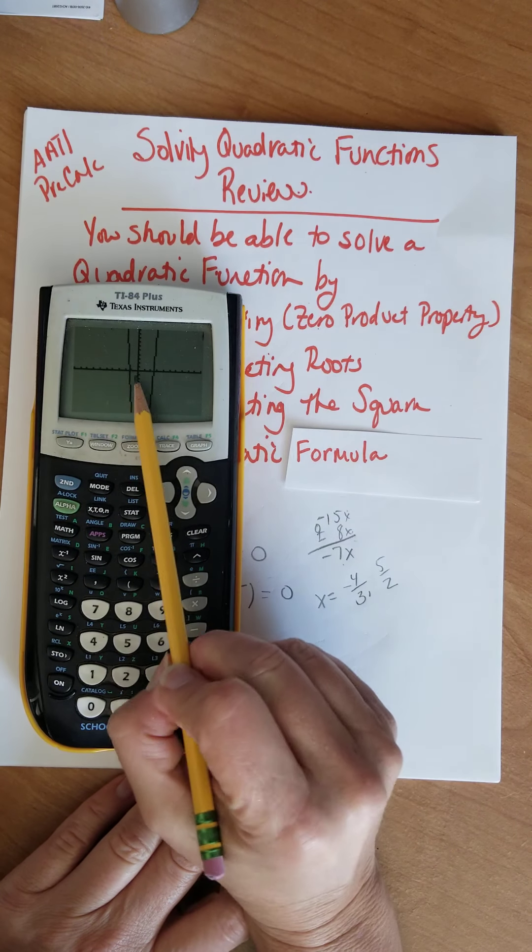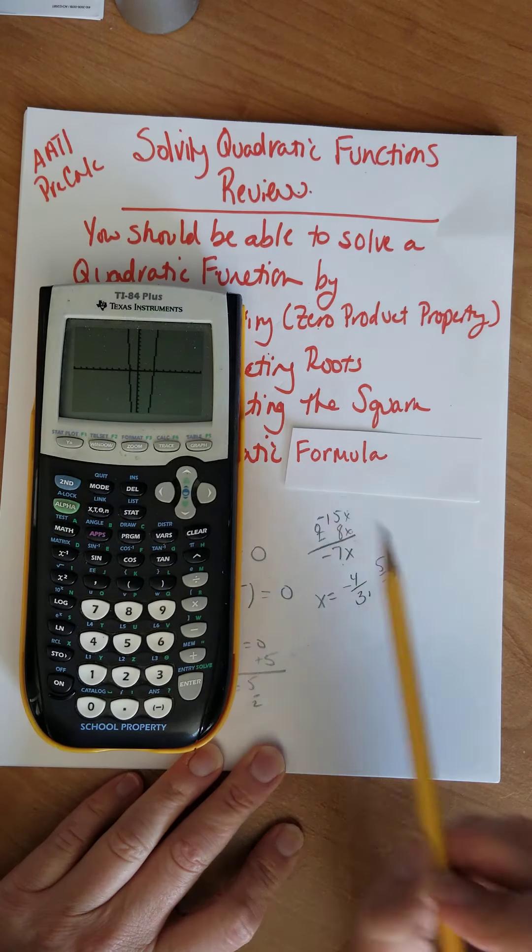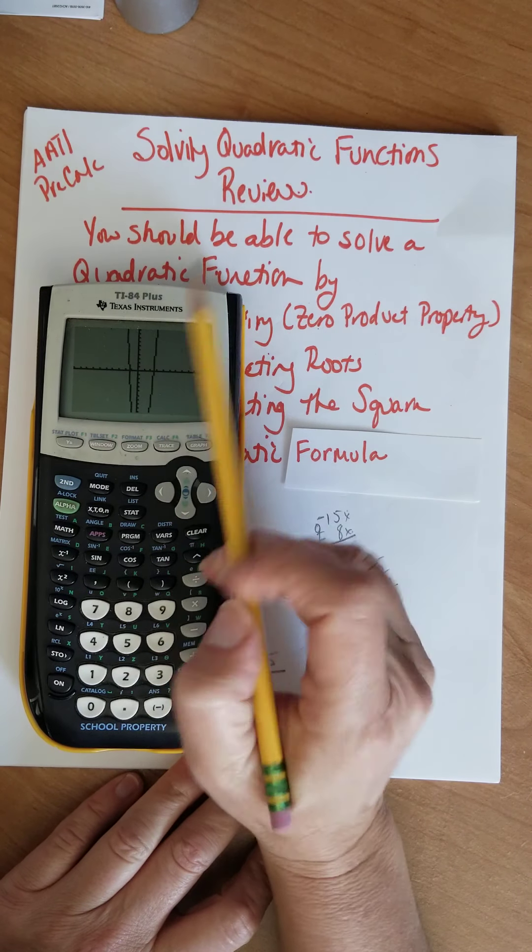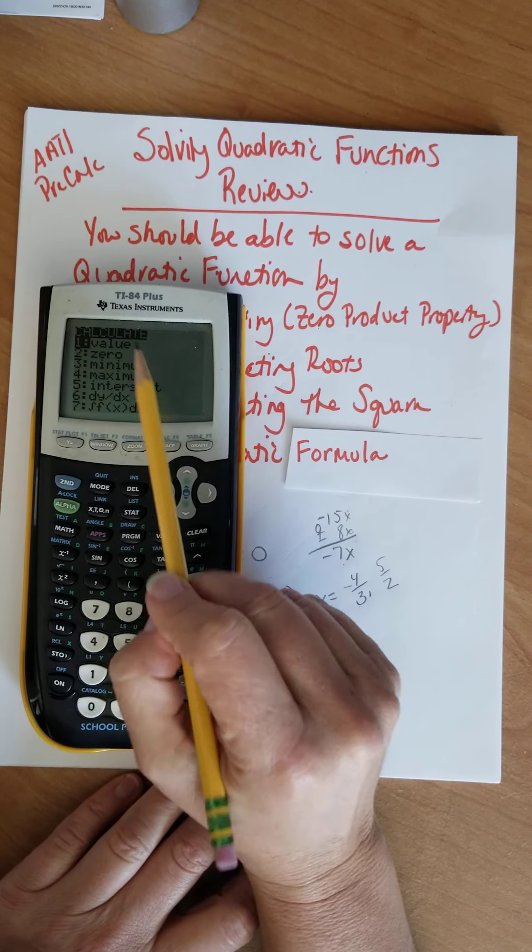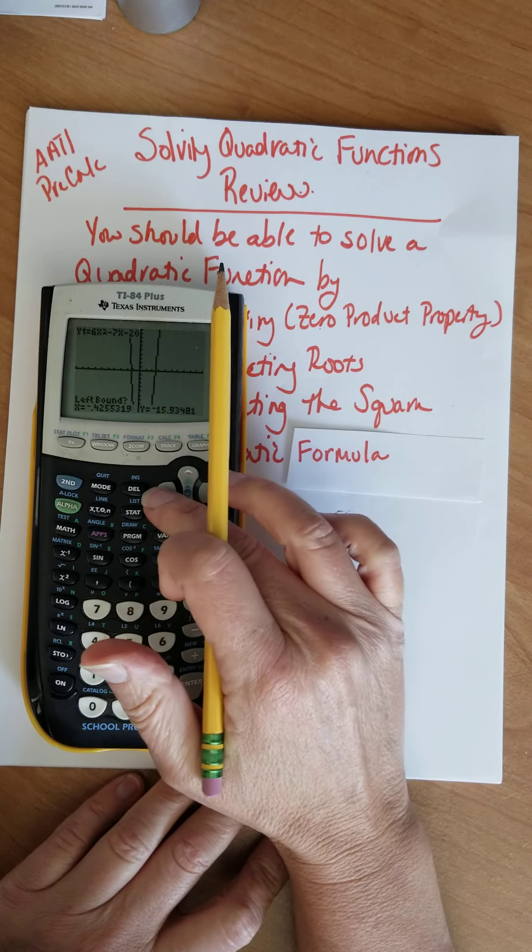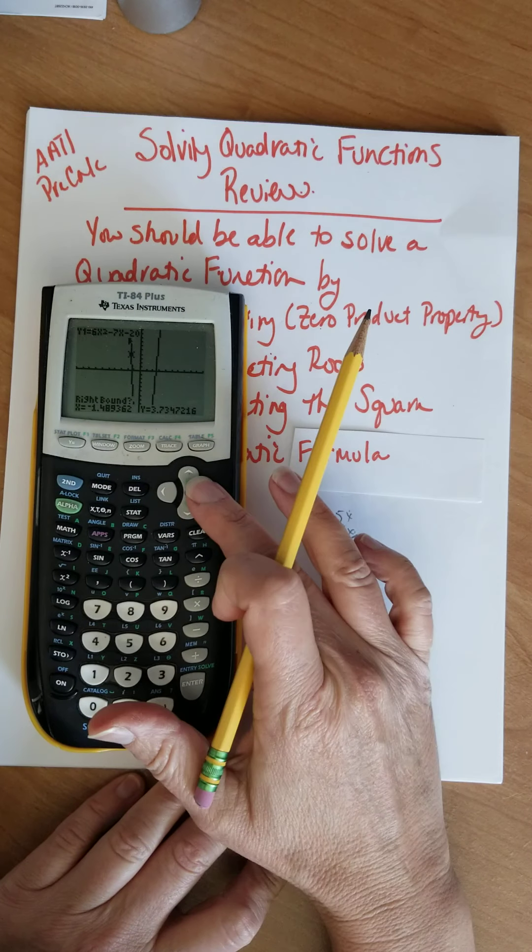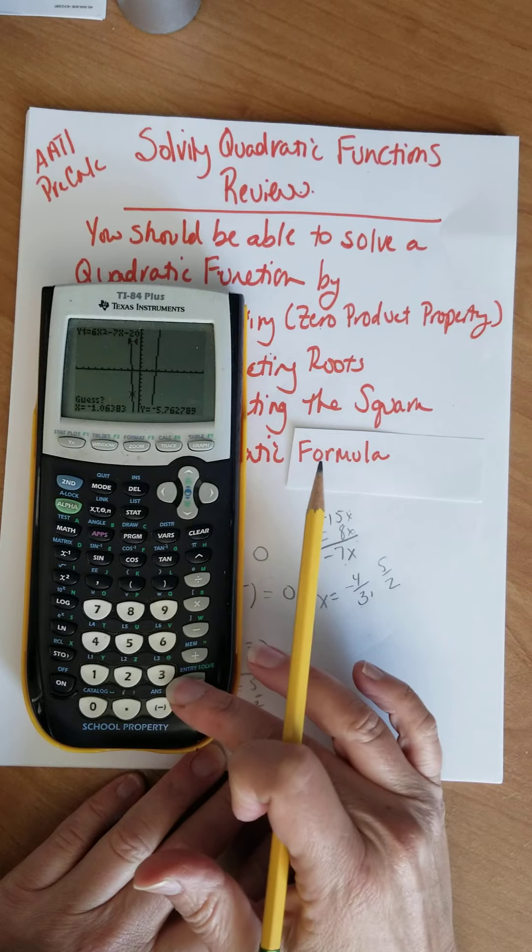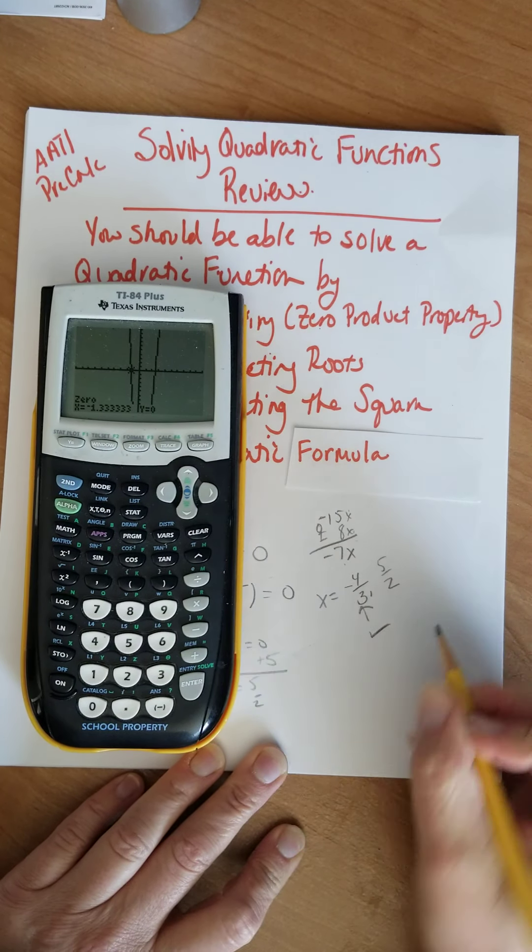I'm going to do a zoom 6 here just for a standard graph. That does look like it's at negative 1 and one-third and that looks like it's at two and a half. To check it, I'm going to actually find my x-intercepts which are called zeros. So second trace, zero is two. I'm going to go to the left of this guy which is above. Got to get above there. There we go. Press enter. Below, press enter and there we go. Negative 1.3 repeating. That's this so that checks.